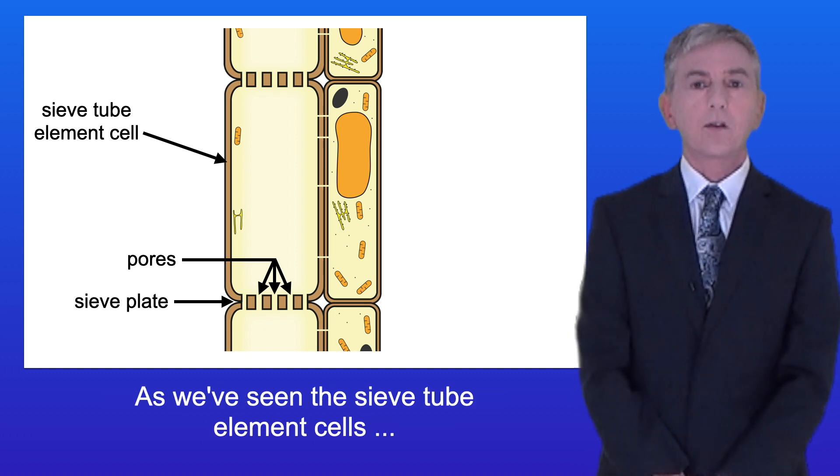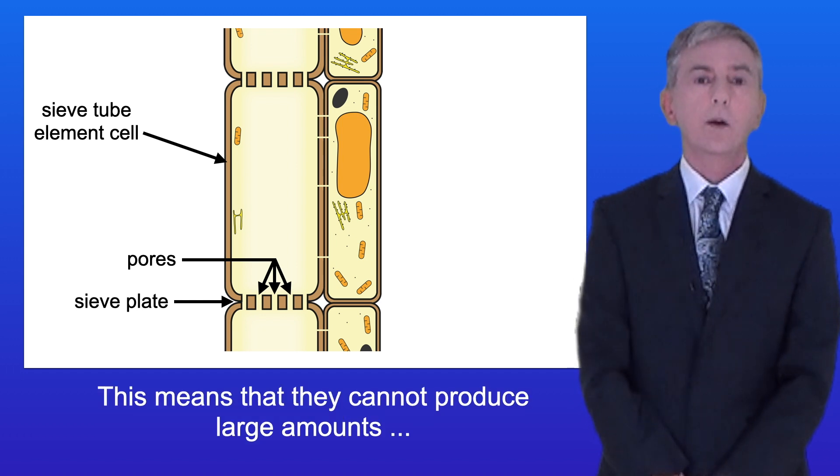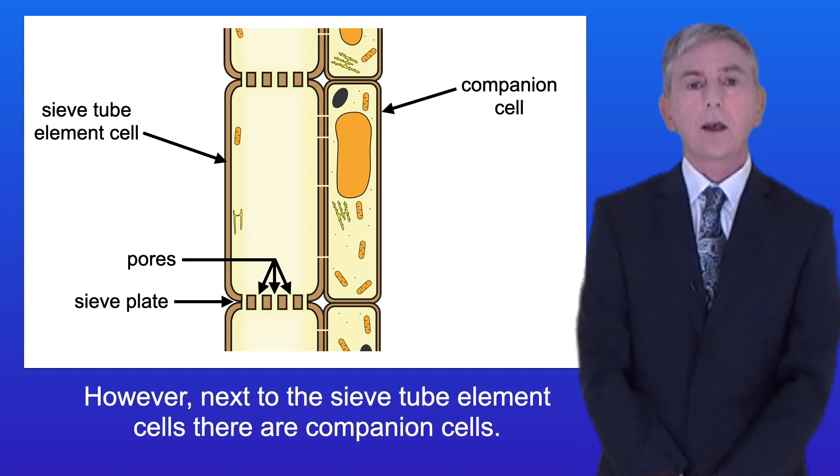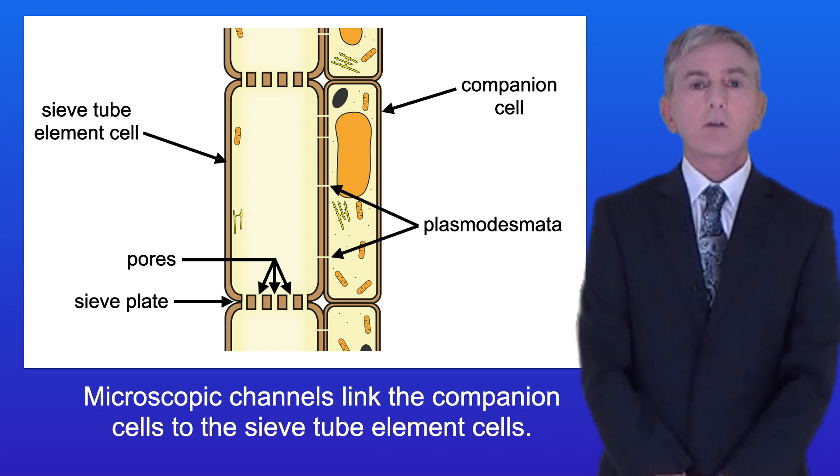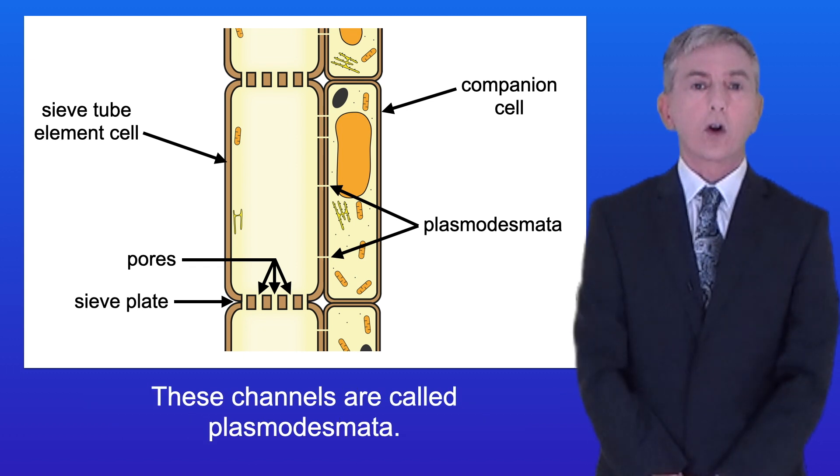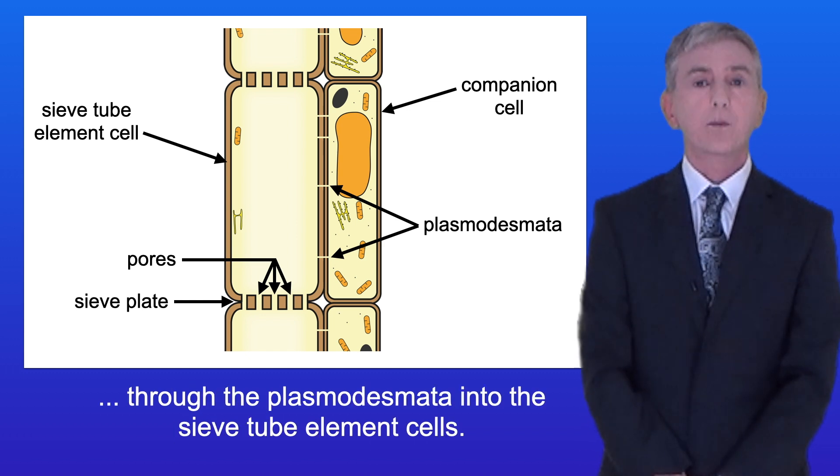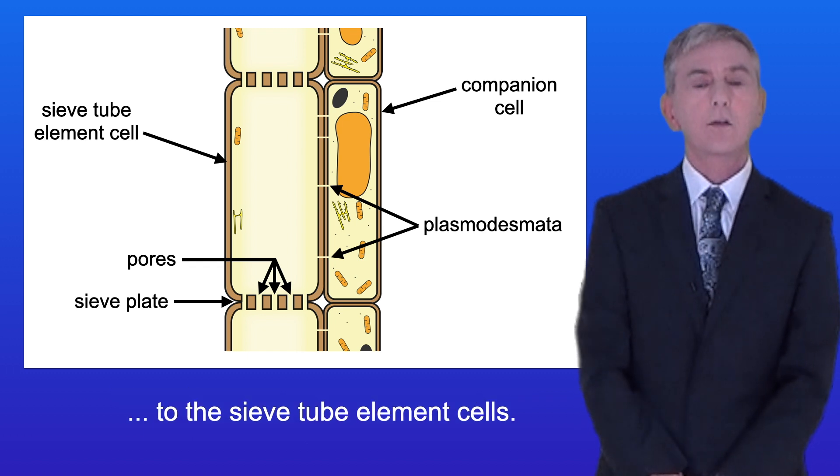The sieve tube element cells have lost most of their organelles and this means that they cannot produce large amounts of essential molecules such as ATP. However next to the sieve tube element cells there are companion cells. Companion cells contain a nucleus as well as large amounts of mitochondria. Microscopic channels link the companion cells to the sieve tube element cells. These channels are called plasmodesmata and molecules such as ATP and proteins can move through the plasmodesmata into the sieve tube element cells. So the role of the companion cells is to provide essential molecules to the sieve tube element cells.